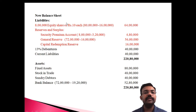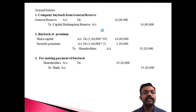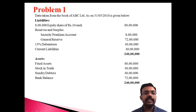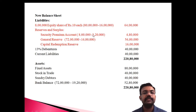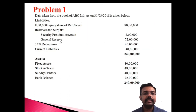Equity share capital: was 80 lakh, bought back 16 lakh, balance is 64 lakh. Security premium: was 8 lakh, utilized 3 lakh 20,000 for the premium, balance is 4 lakh 80,000. General reserve: was 72 lakh, utilized 16 lakh for capital redemption reserve, balance is 56 lakh.